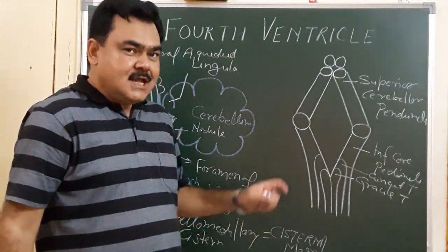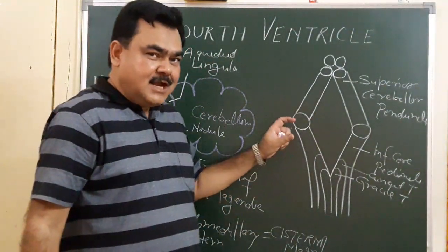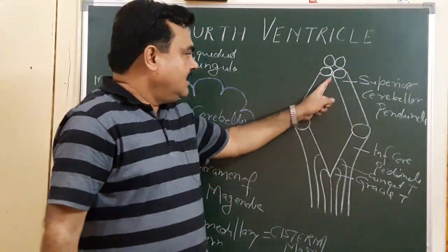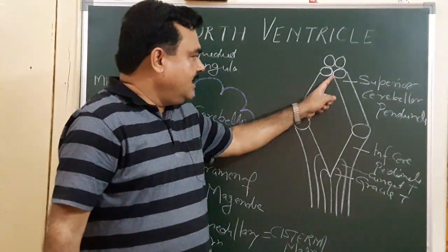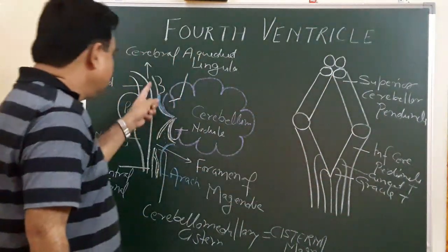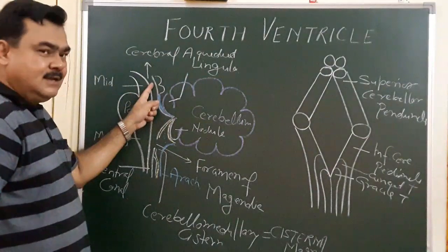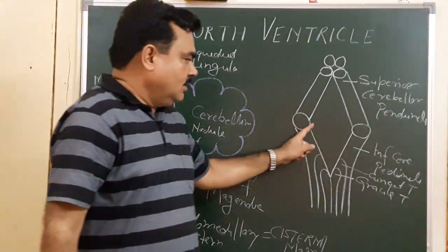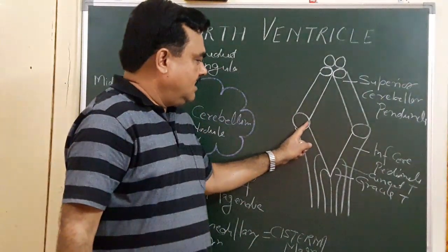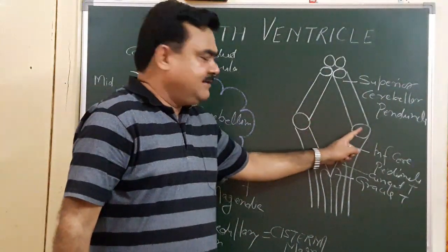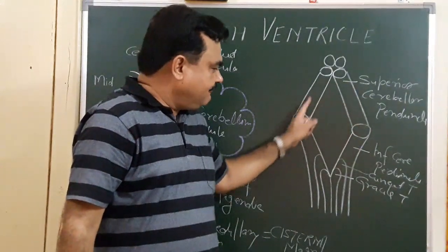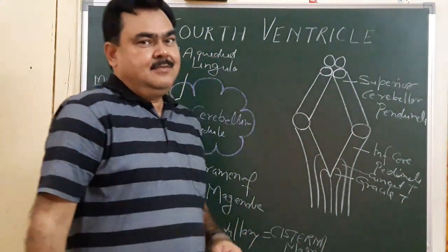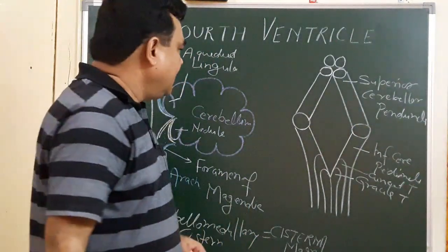The superior lateral wall is formed by the superior cerebellar peduncle on the right and left. The inferior lateral wall is bounded by the inferior cerebellar peduncle on both sides, along with the cuneate tubercle and gracile tubercle. These are the lateral walls. It has four angles: superior angle, inferior angle, and two right and left lateral angles.